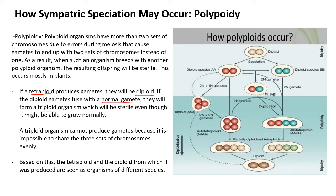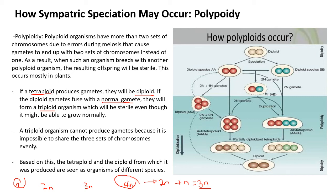The tetraploid and the diploid from which it was produced are organisms of different species. To summarize chromosome notation: N is haploid, 2N is diploid, 3N is triploid, and 4N is tetraploid. All of these would be different species. A tetraploid undergoing meiosis normally makes gametes of 2N; if that 2N gamete mixes with a normal haploid, they make 3N. The 3N organism is considered a different species from the 4N because it cannot make gametes — it's unable to evenly split its chromosomes.